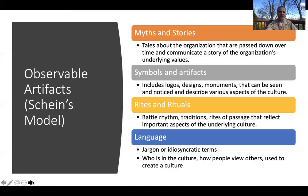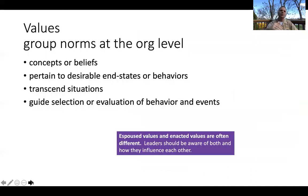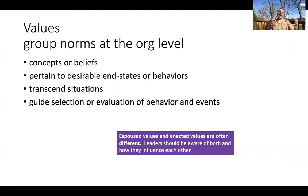So that's observable artifacts — the things above the surface on that iceberg metaphor. Below the surface are the values, which you can think of as group norms at the organizational level — the concepts and beliefs around what we're doing. These values transcend situations and are things that we all adhere to. Certainly honor, courage, and commitment are organizational values, but there are probably also other organizational values, and you should spend time thinking about what the values of your organization are.